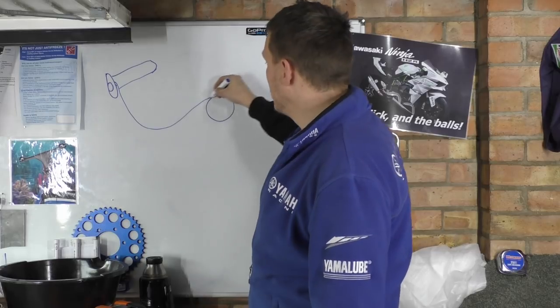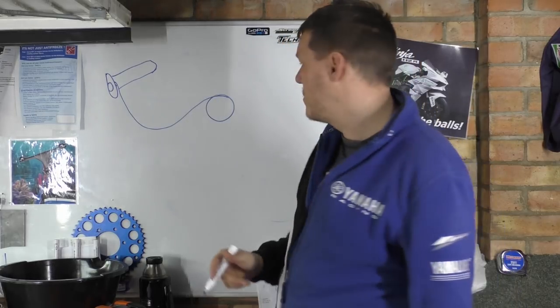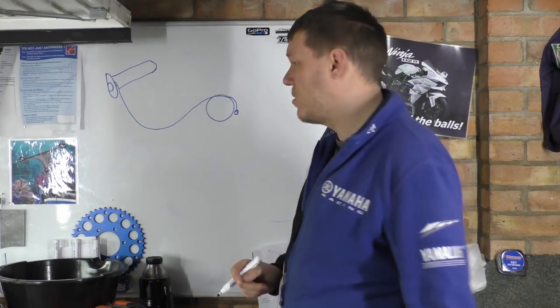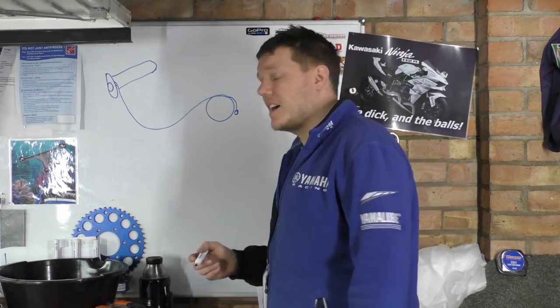So you have a cable basically that goes from here to your carb or throttle body, and it has the same crimp thing on the end. I can't think of it.